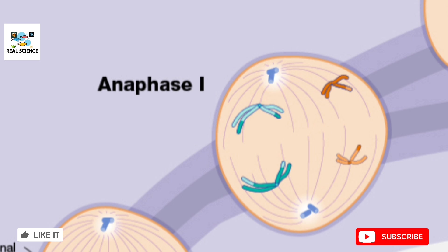The third phase of meiosis one is anaphase one. In anaphase one, the chromosomes are pulled apart from each other, separating the sister chromatids due to the contraction of spindle fibers attached to the polar bodies. This contraction separates the chromosomes, resulting in two sets of chromosomes moving to opposite poles — 2n at each polar body.